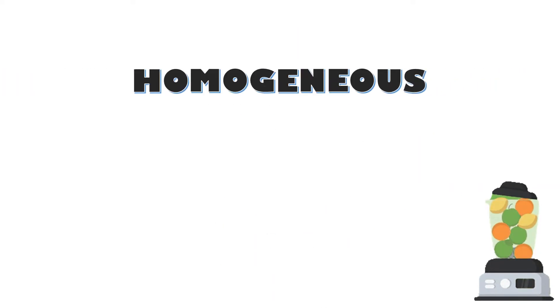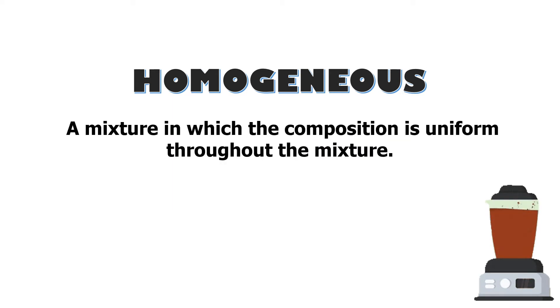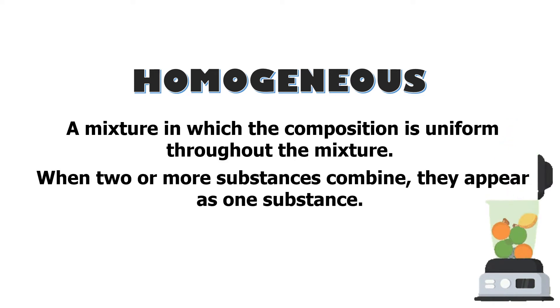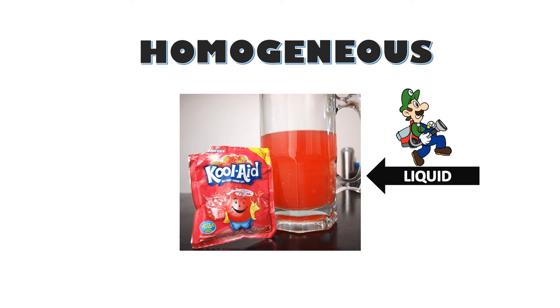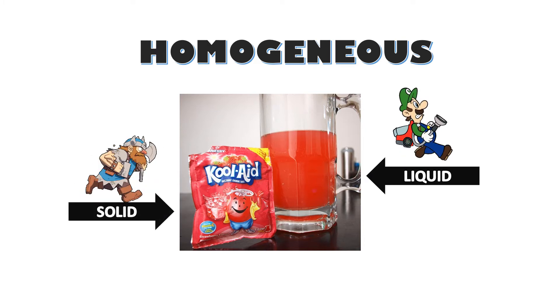As I mentioned earlier, mixtures can either be homogeneous or heterogeneous. What is the difference between the two? A homogeneous mixture is a mixture in which the composition is uniform throughout. When two or more substances combine, they appear as one substance. For example, water, which is colorless, mixed with pink colored powdered juice will eventually look pink after the powder dissolves. Both substances mixed well with each other so that they appear as one.